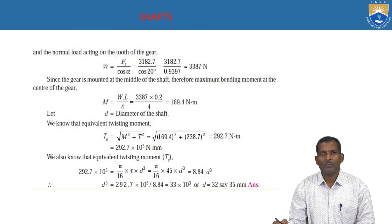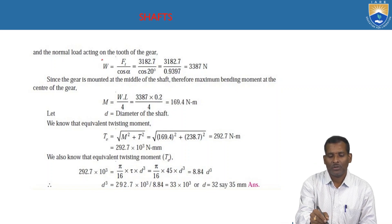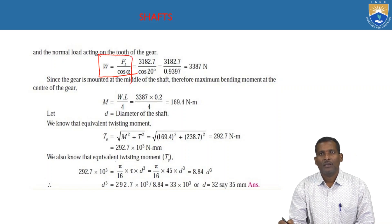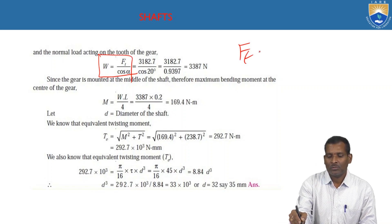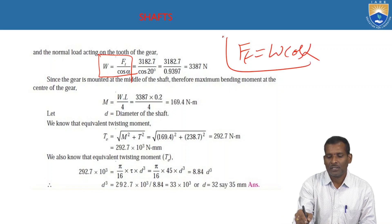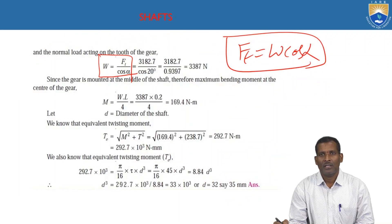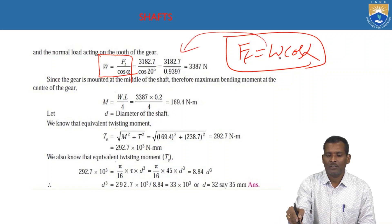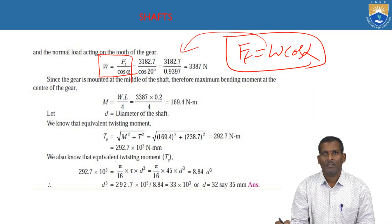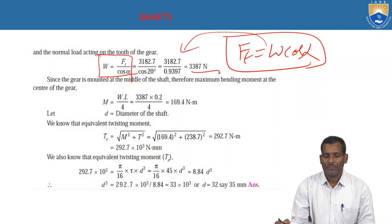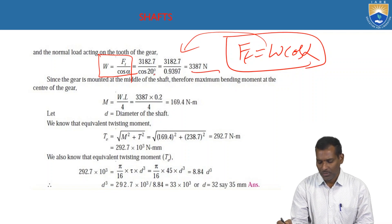Next, calculate the normal load acting on the tooth of the gear. The relation between normal load W and tangential force is: tangential tooth load Ft = W × cos α. We calculate W using this equation and obtain 3387 Newtons. The pressure angle α is given as 20 degrees in our problem. If not given, you may assume 20 degrees.